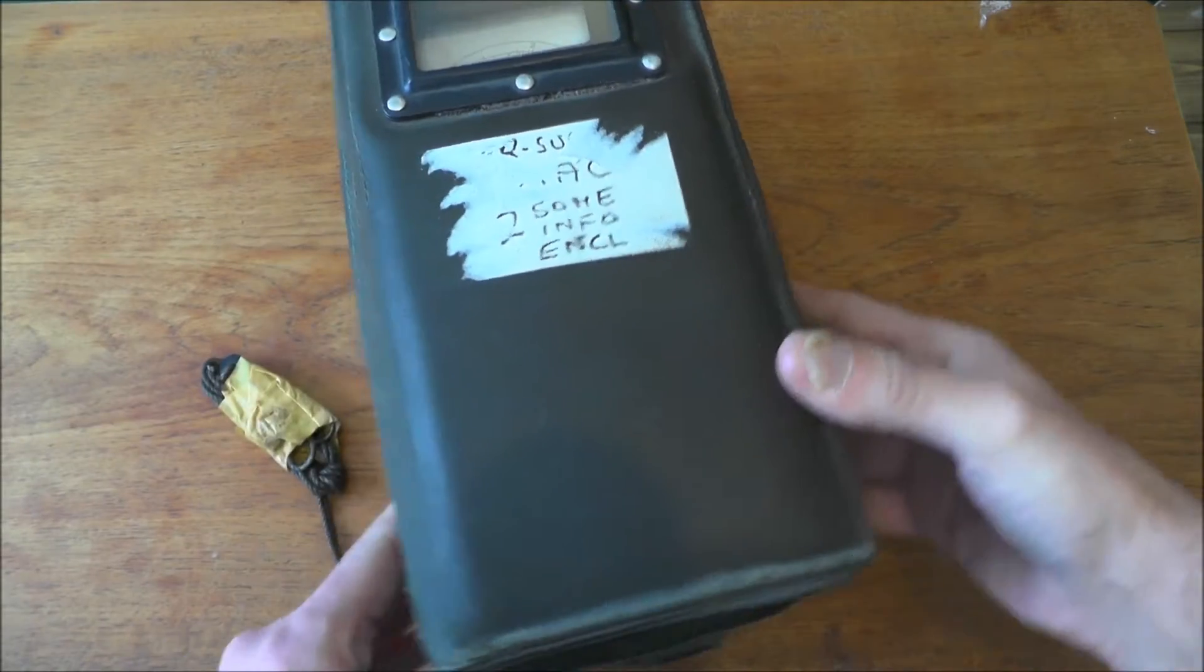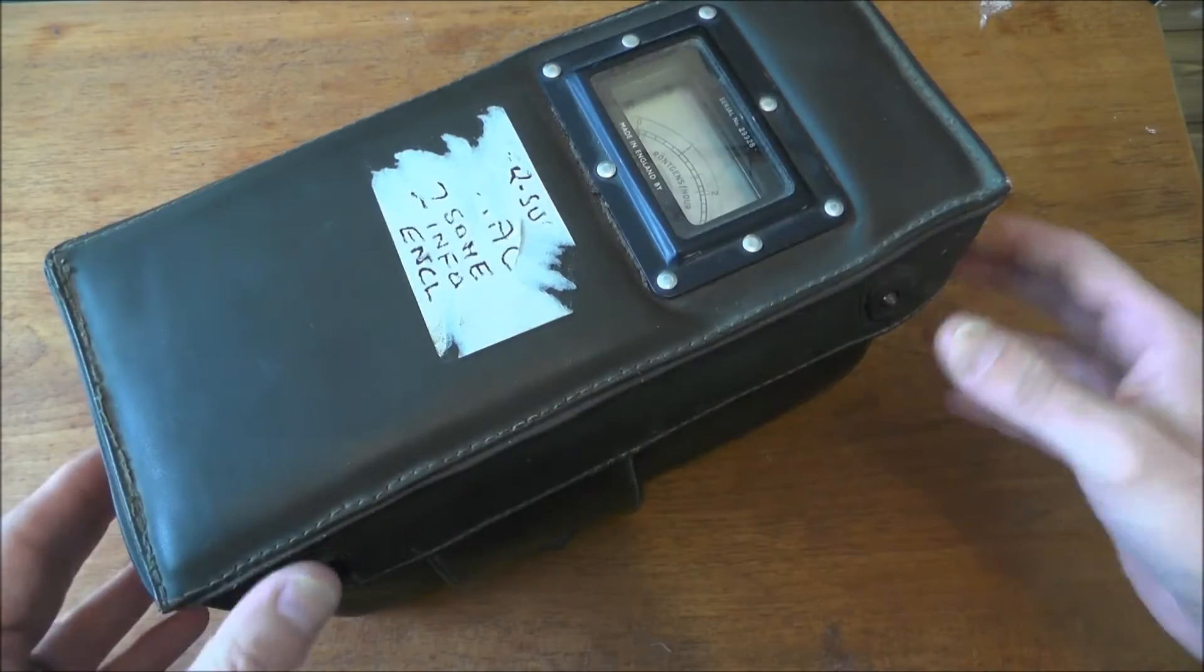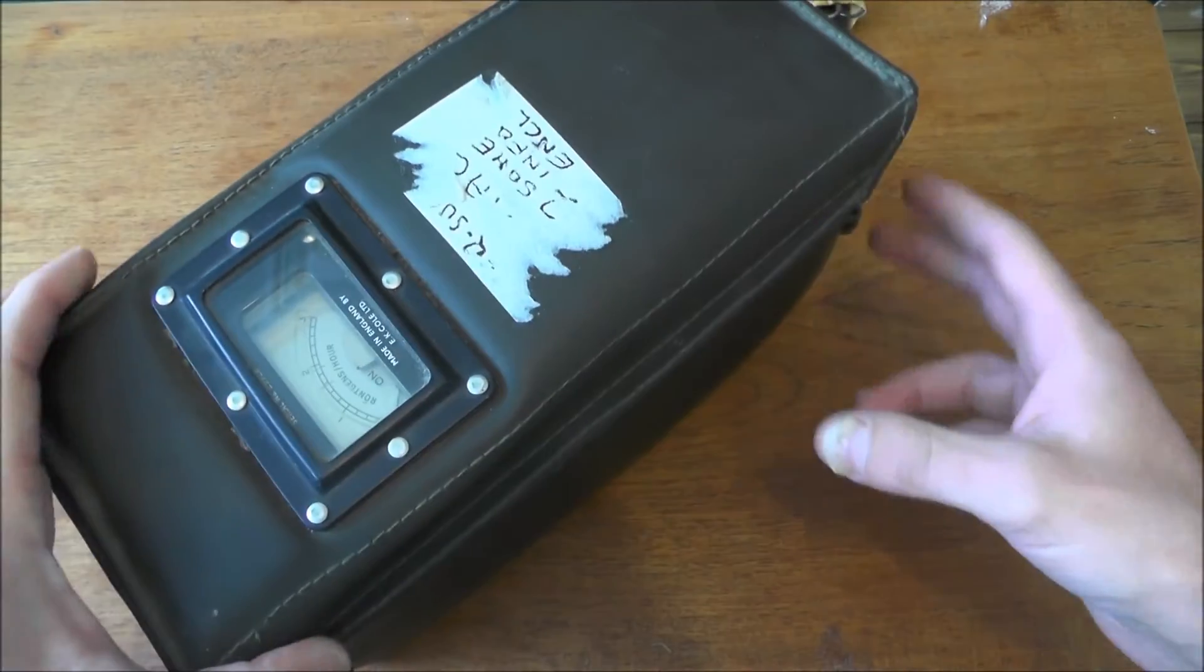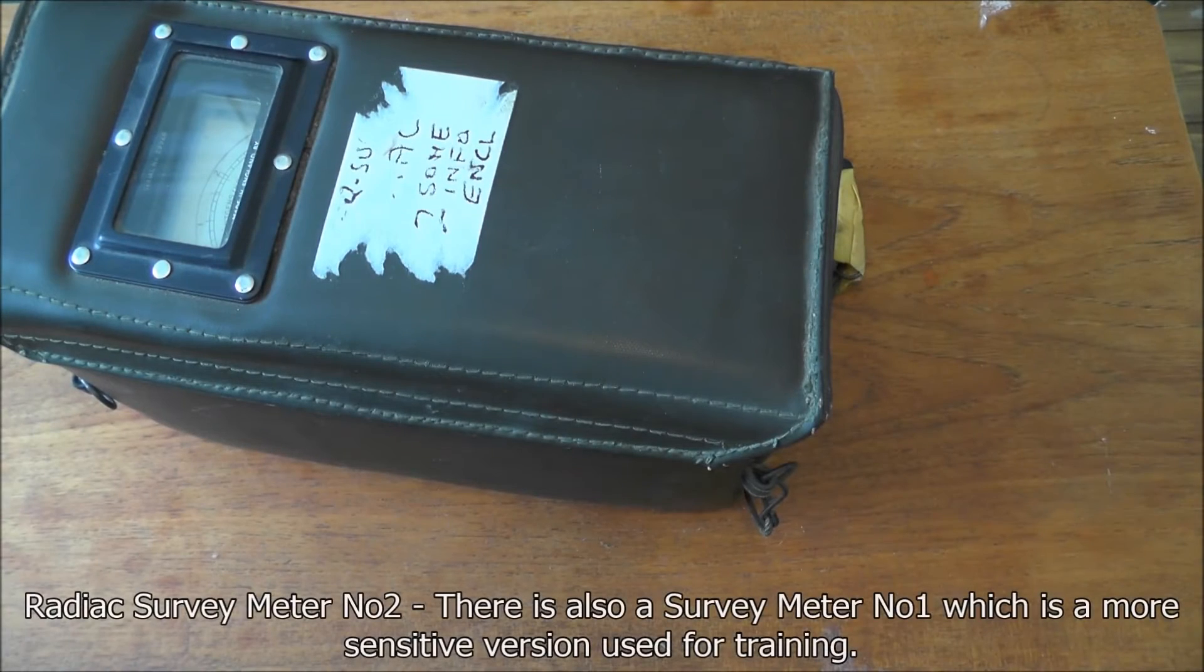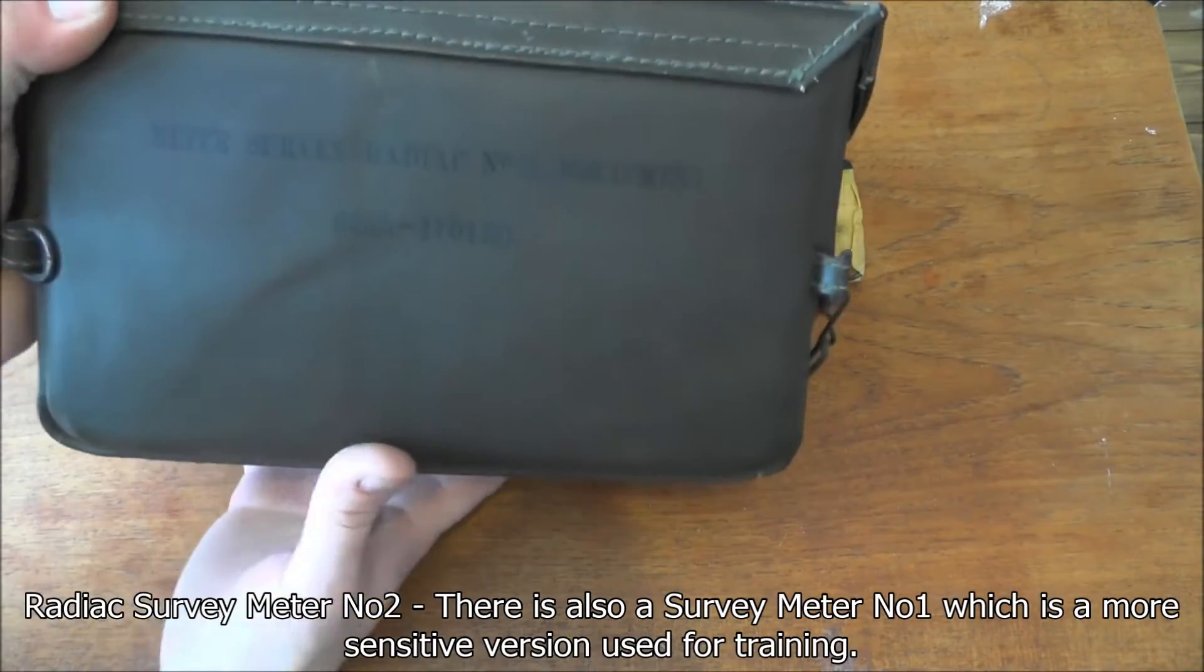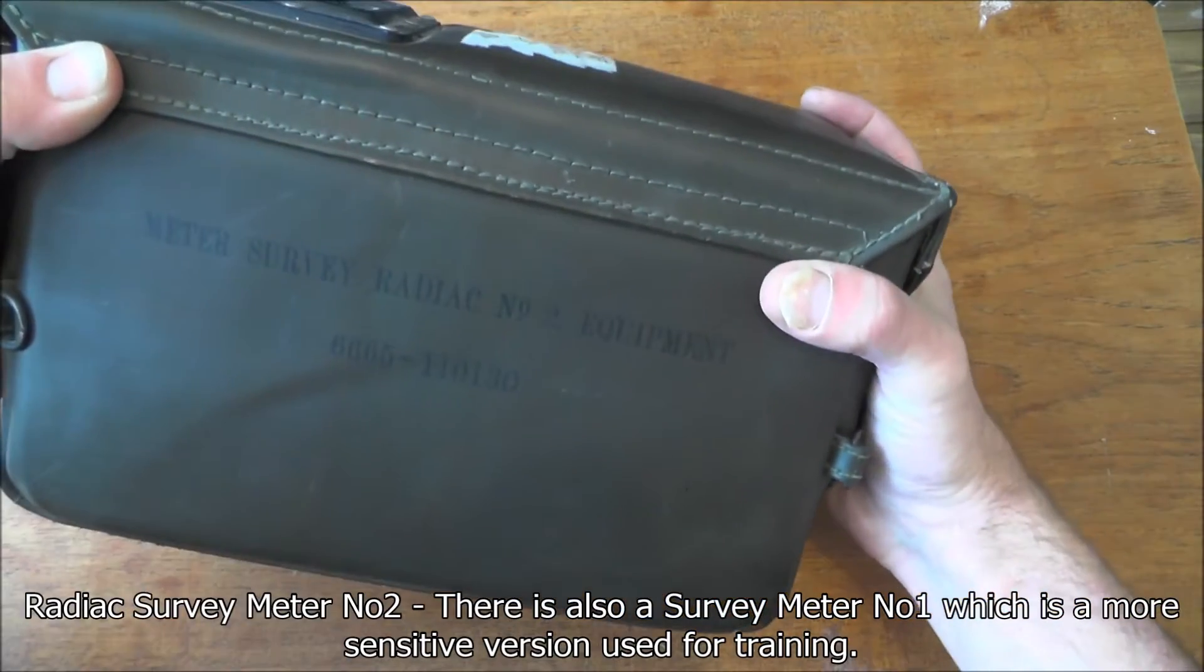What we've got here is a bit of Cold War, or really pre-Cold War technology, which is a RADIAC survey meter number 2. It's essentially a radiation monitor.